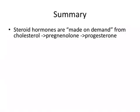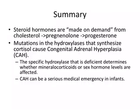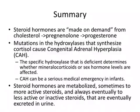In summary: steroid hormones are made on demand from cholesterol. Cholesterol is stimulated to be taken up into steroid-synthesizing cells and converted to pregnenolone, then to progesterone, and further metabolized to the other steroid hormones. Second, mutations in the hydroxylases that synthesize cortisol cause congenital adrenal hyperplasia (CAH); the specific hydroxylase deficient determines whether mineralocorticoids or sex hormone levels are affected, and CAH can be a serious medical emergency in infants. Finally, steroid hormones are all metabolized — sometimes to more active steroids, but always eventually to less active or inactive steroids — and are excreted in the urine.